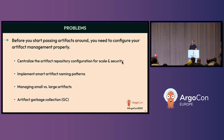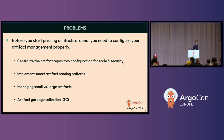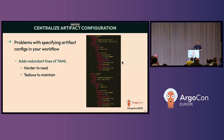Before you start passing artifacts around, we're going to cover some features that can help you solve problems. We're going to cover four features: centralizing the artifact repository configs, implementing good naming conventions to help your team find their artifacts, managing small versus large artifacts, and a newer feature in Argo Workflows called artifact garbage collection. I'll now hand it over to Julie to talk about centralizing artifact configs.